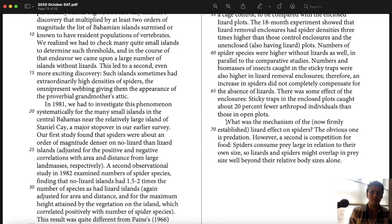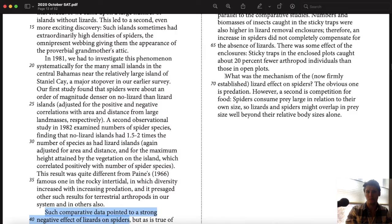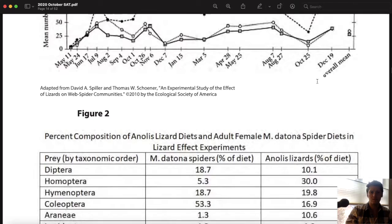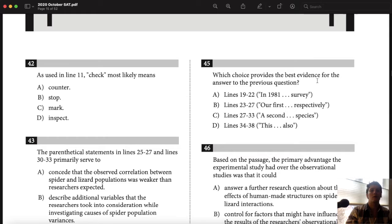What was the mechanism of the now firmly established lizard effect on spiders? The firmly established effect, it seemed like before they weren't sure, but it looked like lizards have a negative effect on spiders, and now it sounds like they feel more sure of that. So now I found out the results of the study without reading any of the study. The obvious one is predation. In other words, lizards eating spiders. However, a second is competition for food. Spiders consume large prey in relation to their own size. So lizards and spiders might overlap in prey size well beyond their relative body sizes alone. Even though spiders are small, they might eat the same stuff as lizards, even though lizards are bigger. All I know is that when there's lizards, there's less spiders, and we don't know exactly why. It could be predation or it could be they eat the same stuff.